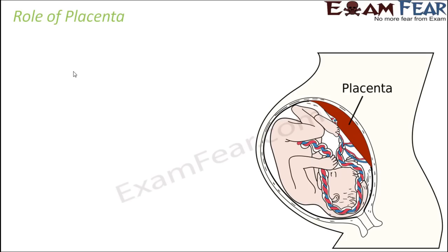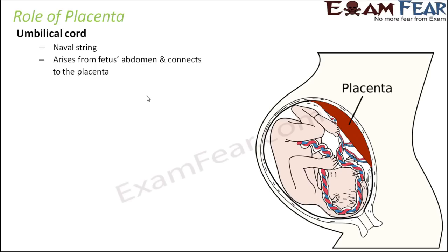Now let us look at the role of placenta. In this picture it is more clear — at a later stage when the baby is quite developed, you can see this cord, which is the umbilical cord. This cord starts from the abdomen of the fetus and connects to the placenta. The umbilical cord is nothing but a navel string — it arises from the fetus's abdomen and connects to the placenta.